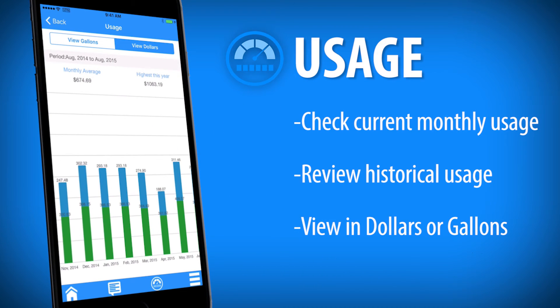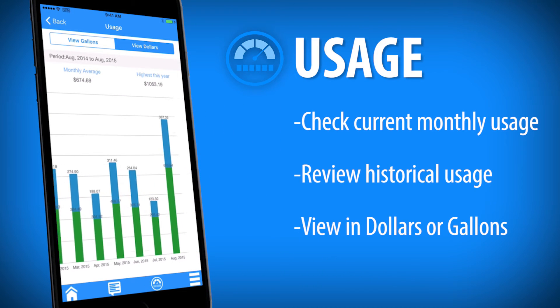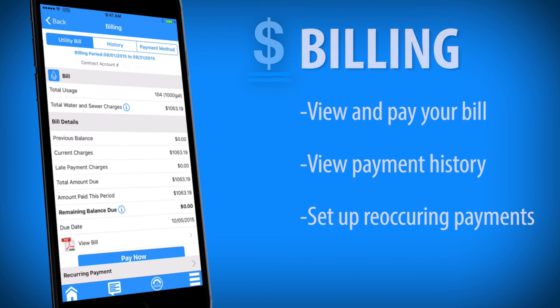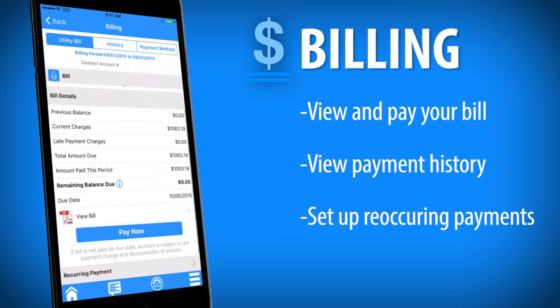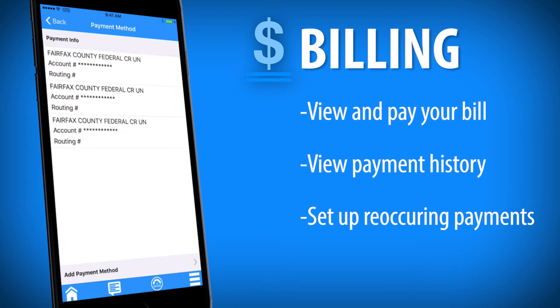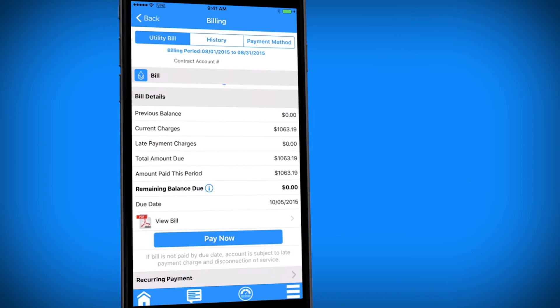In Usage, get a bird's eye view of your personal usage in dollars and gallons, both past and present. View and pay your Fairfax utility bill, check billing history, and set up recurring payments in Billing.